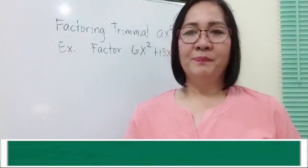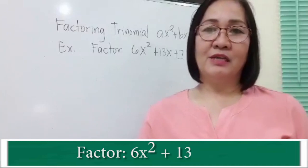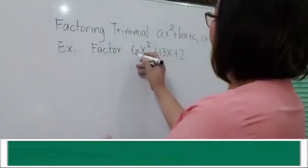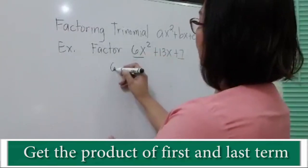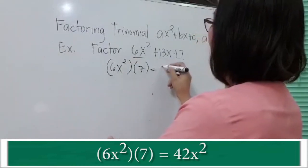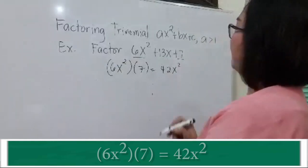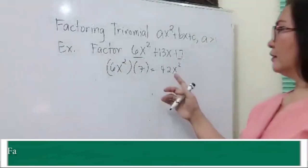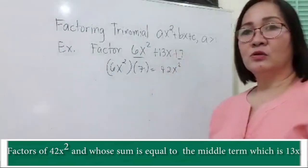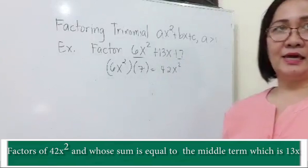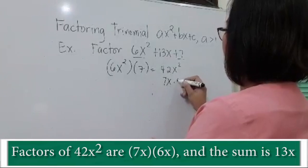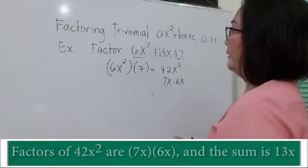Let's have one more example. Factor 6x² + 13x + 7. We have to get again the product of the first and the last term. So 6x² times 7 is equal to 42x². Then we're going to get the factors of 42x² wherein the sum is equal to the middle term, which is 13x. So we have 7x times 6x.